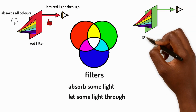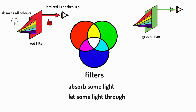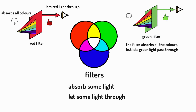If you have a light source and a green filter, the filter absorbs all the colours but lets green light pass through, making everything have a green tint and green objects will look very green.